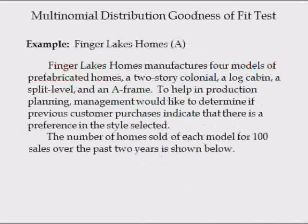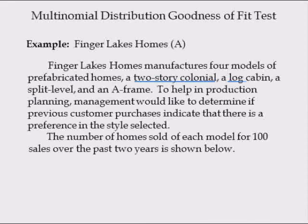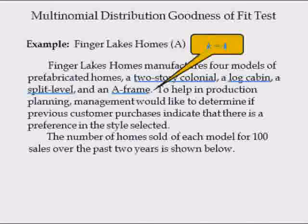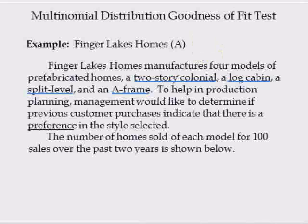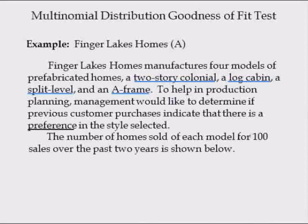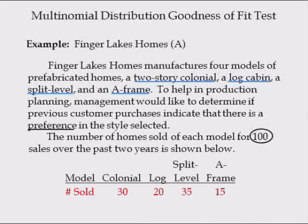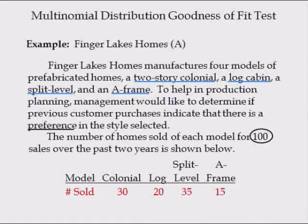In the following example, Finger Lakes Homes manufactures four models of prefabricated homes: a two-story colonial, a log cabin, a split-level, and an A-frame. Note there are four categories, so k equals 4. To help in production planning, management would like to know if previous customer purchases indicate a preference in the style selected. The number of homes sold of each model for 100 sales over the past two years is shown. The observed frequencies are: 30 colonial homes, 20 log homes, 35 split-level homes, and 15 A-frame homes.